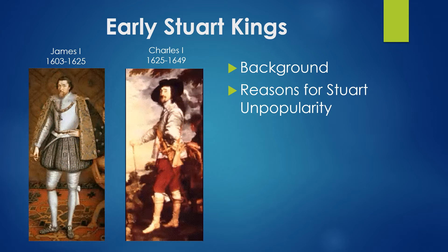First, especially James, but really both of them, believed in absolute monarchy. In fact, James wrote a tract called the True Law of the Free Monarchies that advocated the divine right of kings. This didn't sit well with Parliament, who believed that Parliament had the right to make decisions in England. Furthermore, the Stuart kings also often imprisoned their opponents, using the Court of the Star Chamber — begun by Henry VII — to imprison people without fair trial.